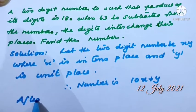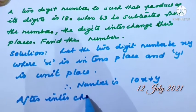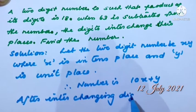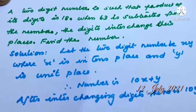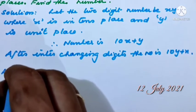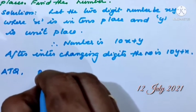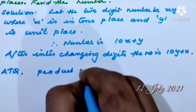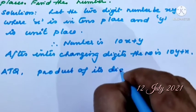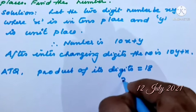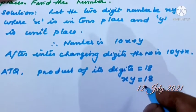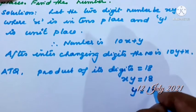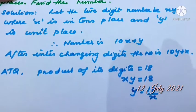After interchanging digits, the number becomes 10Y plus X. According to the question, the product of the digits is 18 — that means X times Y equals 18. This is equation one. We can also write Y equals 18 by X.